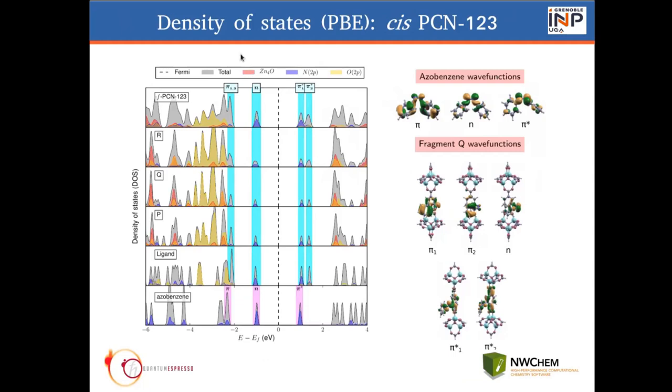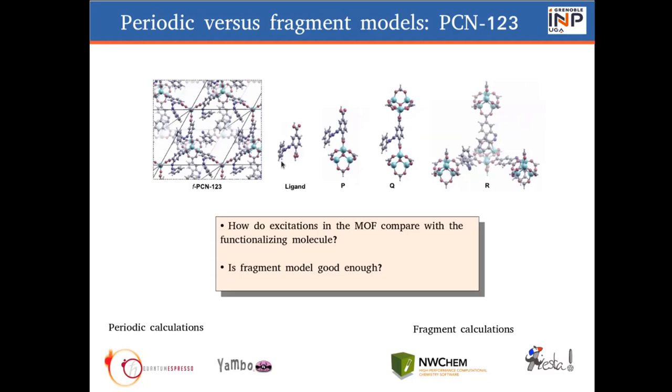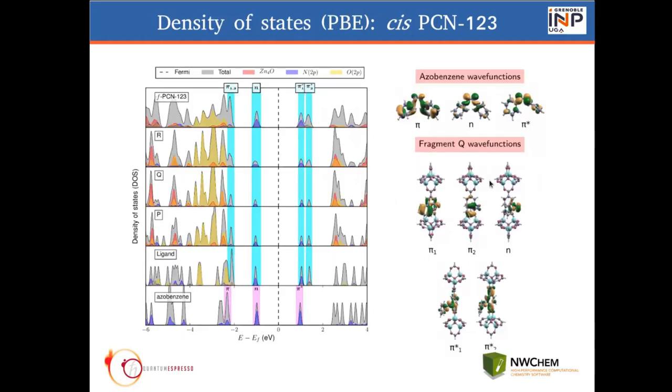The first thing is to look at the density of states, starting from azobenzene, then the ligand, and then different fragments. These are the fragments that we use. We have the full periodic MOF, the ligand, which is the more or less fragment that you can think of, Q and R. And you see that throughout this series of MOFs, you have these pi, n, and pi-star.